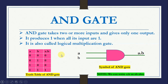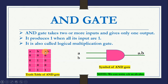Let us see the truth table of two boolean variables A and B. The truth table will have the values 00, 01, 10, and 11. We apply the AND gate on these two boolean variables. The symbol of AND gate is dot, so it will become A dot B.